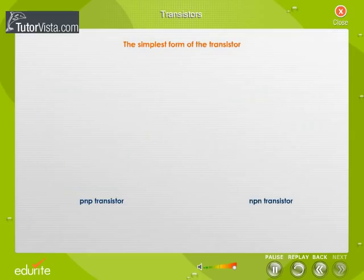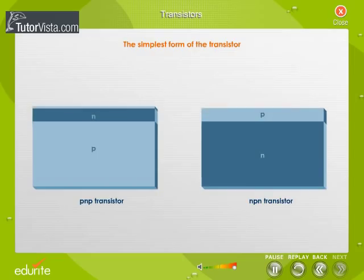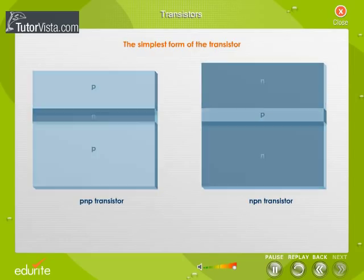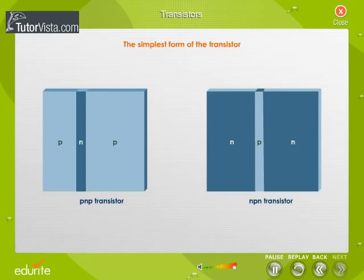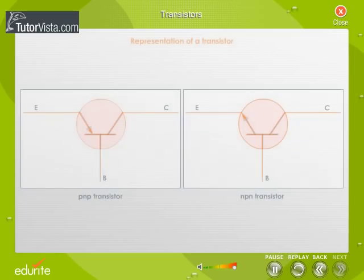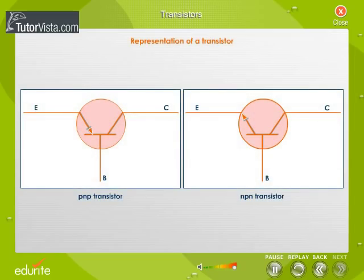Transistors are normally made by growing one region onto the other. Observe that all three blocks of the transistor are not equal in size. This is how a PNP and an NPN transistor are represented.